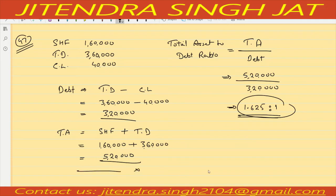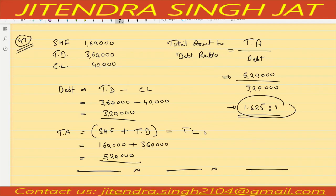A student asks: why has shareholder fund come into total assets — it is equity? The teacher explains: total assets equal total liability, and total liability equals total assets. In a balance sheet, shareholder funds plus non-current liability plus current liability equals total liability, and total liability equals total assets. In this manner we computed the answer.